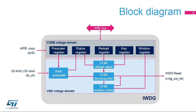Independent Watchdog registers are located in the core voltage domain, while its functions are in the VDD voltage domain. Two clocks are needed: the APB clock is required to access registers, and the LSI clock is required for the functional part of the Watchdog. This architecture allows the Independent Watchdog to remain active even in stop, standby, and shutdown modes. A programmable 8-bit pre-scaler is used to divide the LSI oscillator frequency, and the 12-bit down counter defines the timeout value.